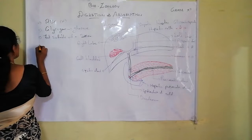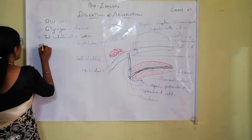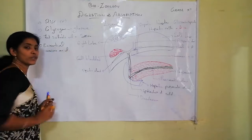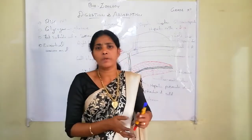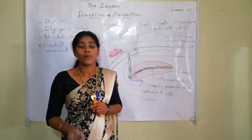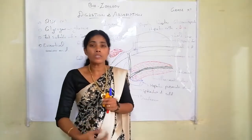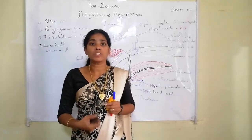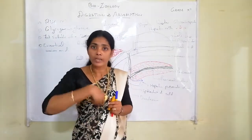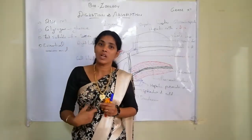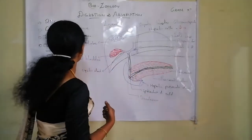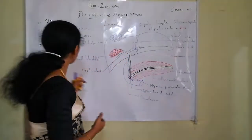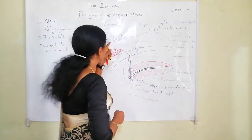The liver is also involved in the synthesis of essential amino acids. Essential amino acids are those that cannot be synthesized by the body and must be taken through the diet, unlike non-essential amino acids which the body produces naturally. These are the other functions of the liver.